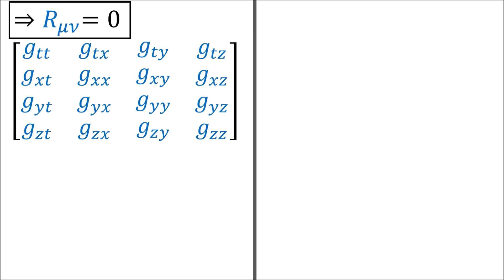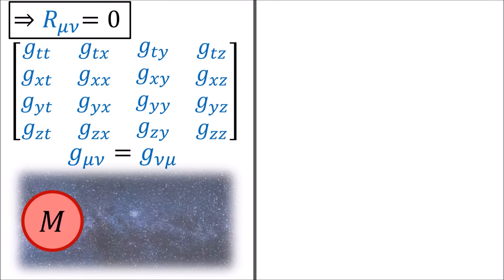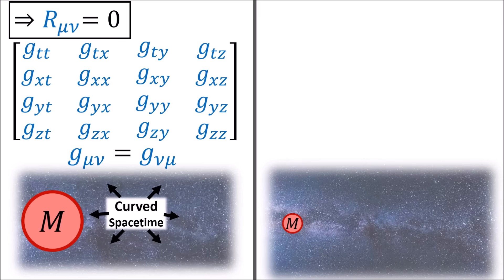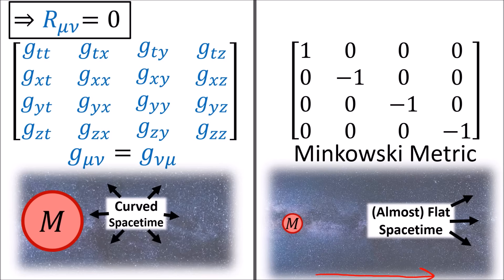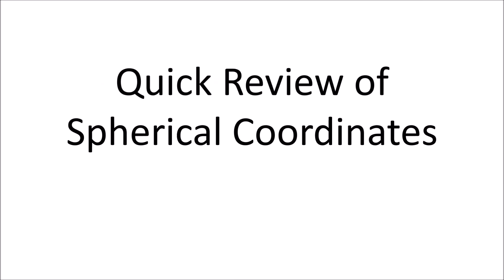Our job is to take this equation and solve for the components of the 4x4 spacetime metric that describes the curved spacetime near a body of mass m. We're also going to assume that as we move far away from the mass, the effects of gravity become negligible and spacetime becomes basically flat, described by the Minkowski metric. Before I start solving for the metric, I'm going to do a quick review of spherical coordinates.